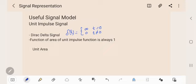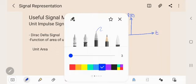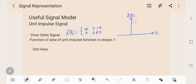So the signal will be represented like this. This is our time axis and our unit impulse signal. We can see our signal goes to infinity when T equals zero.